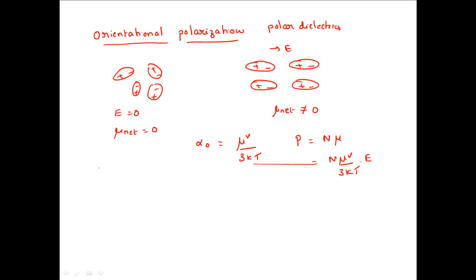The final type is space charge polarization, which takes place in materials having multiple phases. Here, ions diffuse through layers of the material and reach the positive and negative electrodes. This is a very slow process, and this type of polarization is referred to as space charge polarization.